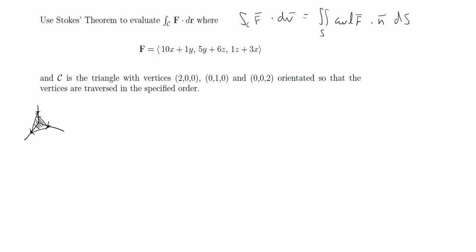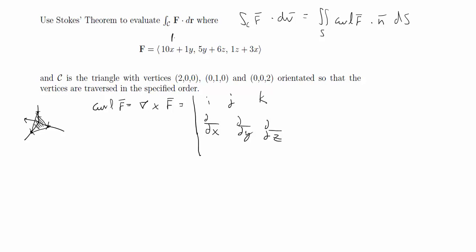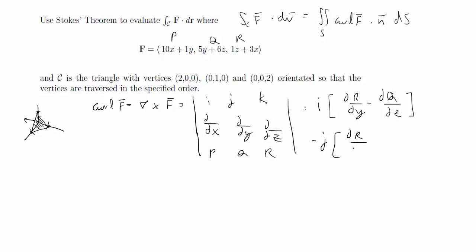The curve integral equals the curl of the vector field dot n ds. One of the first things we can do is solve for the curl of the vector field, which equals del crossed with the vector field. That's going to be a matrix: i, j, k; del is partial/partial x, partial/partial y, partial/partial z. To simplify the notation, we call the components p, q, r. So the curl equals (∂r/∂y − ∂q/∂z) i − (∂r/∂x − ∂p/∂z) j + (∂q/∂x − ∂p/∂y) k.